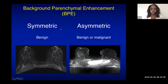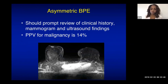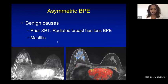Symmetric BPE is benign. Asymmetric BPE can be benign or malignant, with a positive predictive value for malignancy of around 14%. Benign causes of asymmetric BPE include prior radiation therapy — which causes decreased BPE in the treated breast — and mastitis or breast infection. If clinical history and prior images don't explain the asymmetry, you should be suspicious for malignancy.